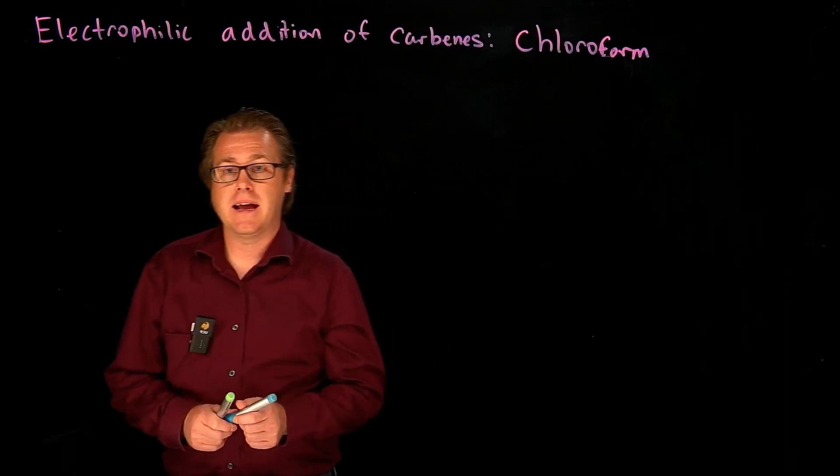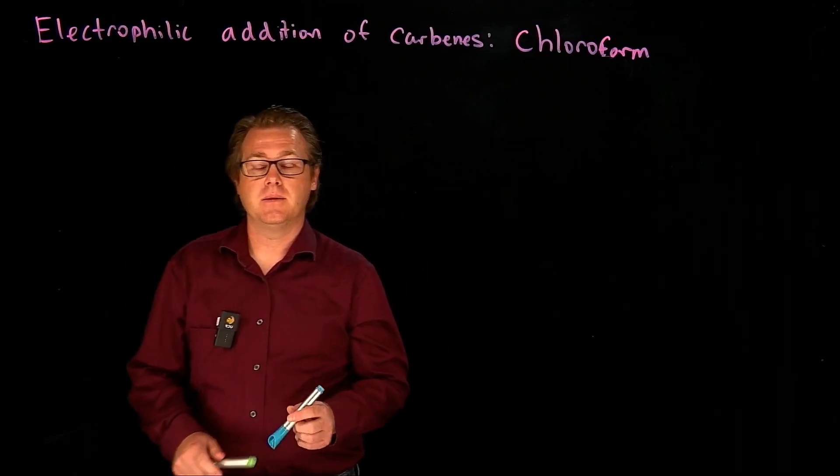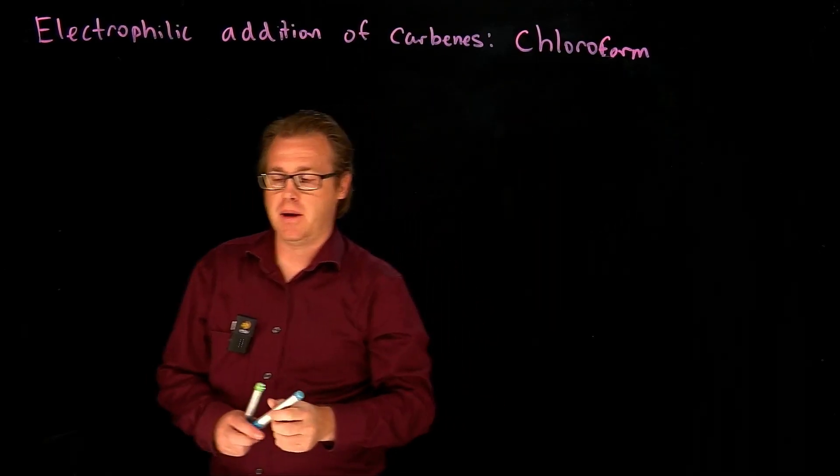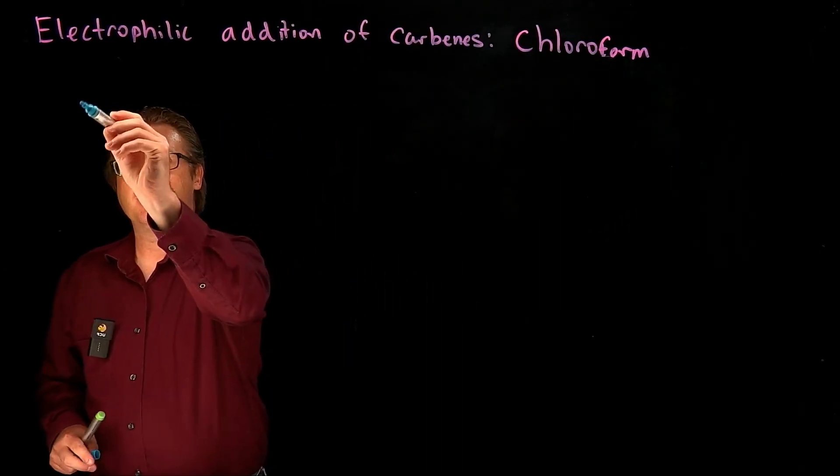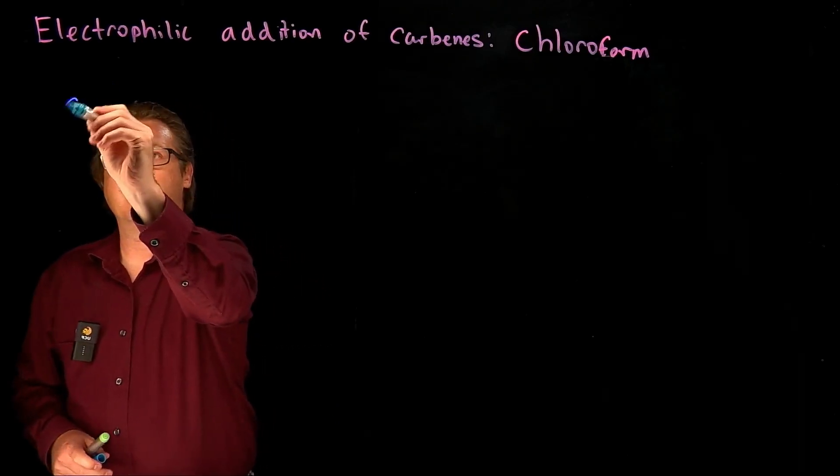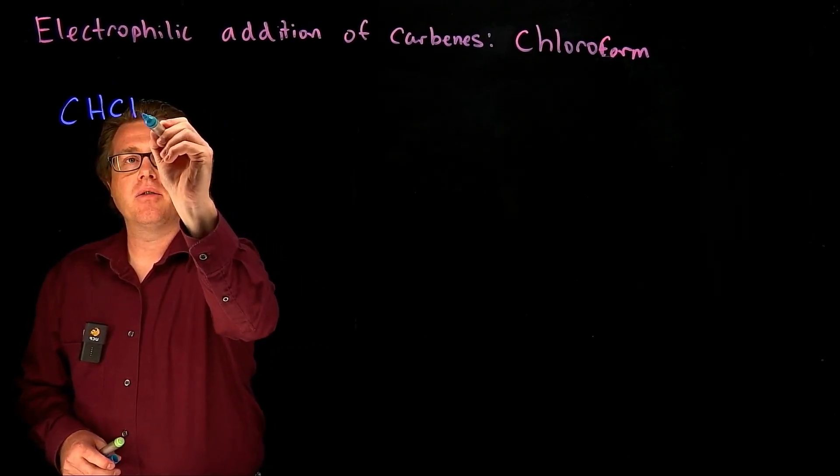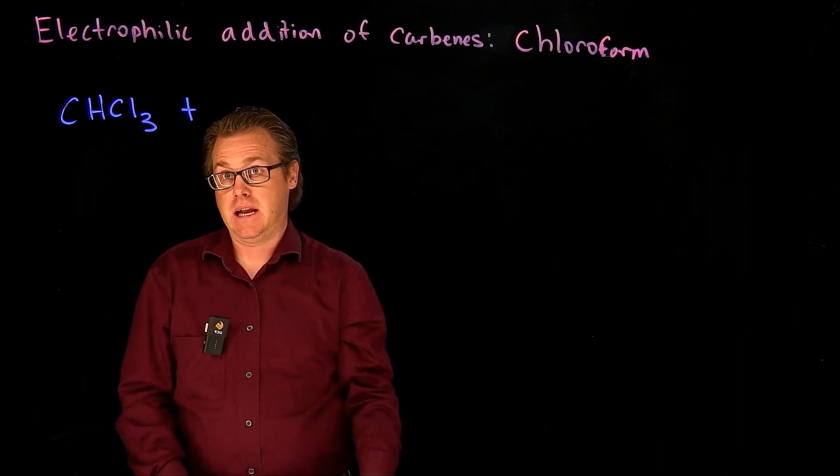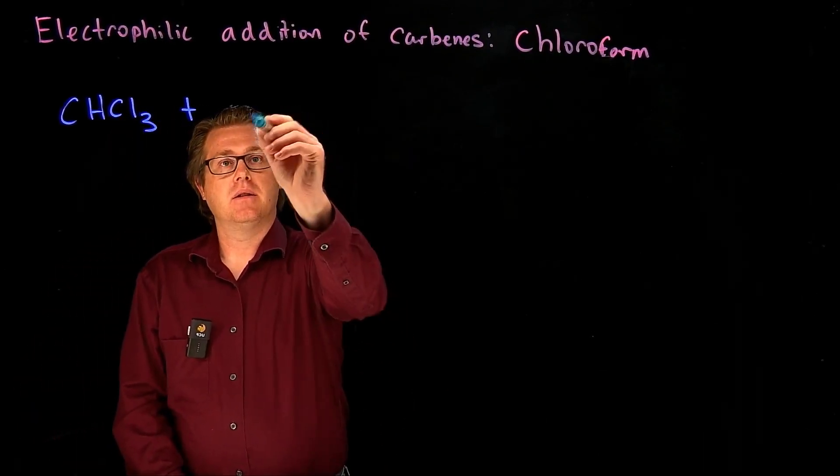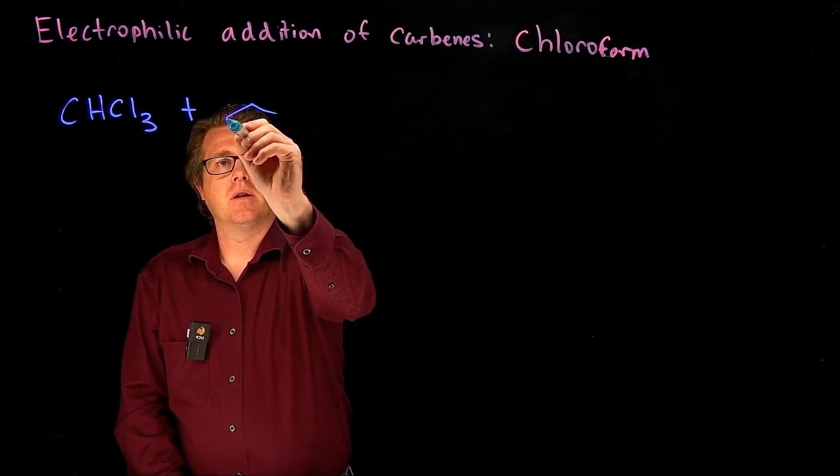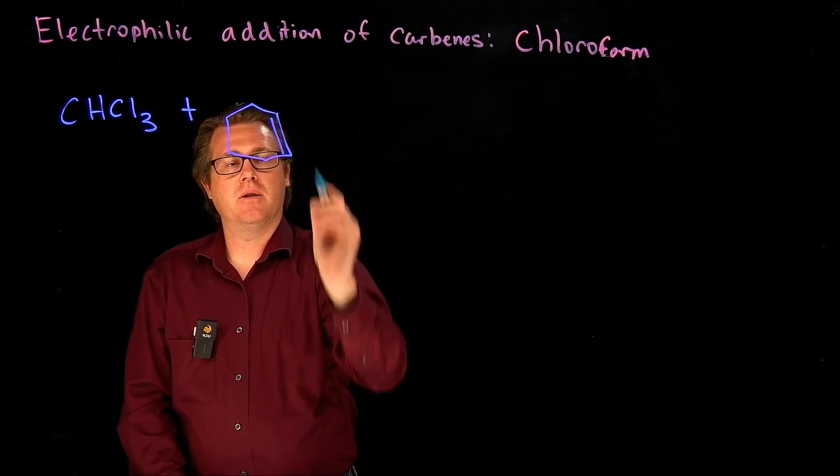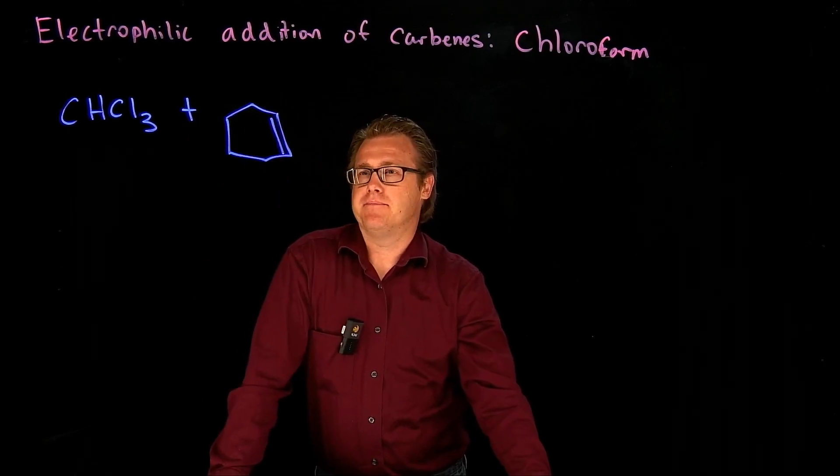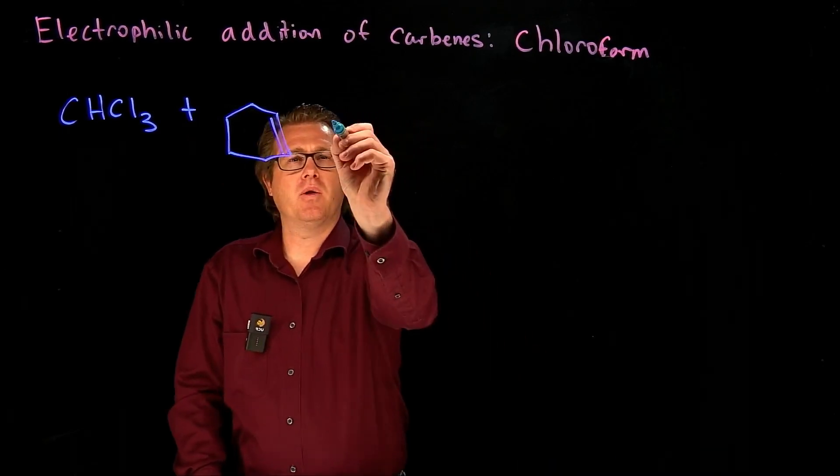Let's take a look at another reaction that involves carbenes, but this time we're going to use chloroform to form our carbene. So chloroform has a formula of CHCl3, and we treat that with an alkene. Let's treat it with cyclohexene. What are we going to get?